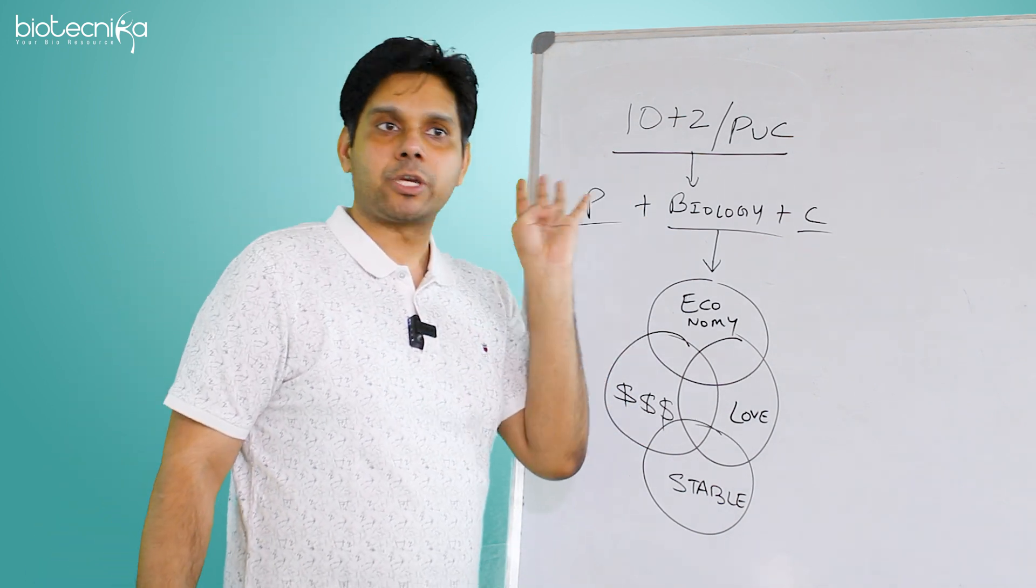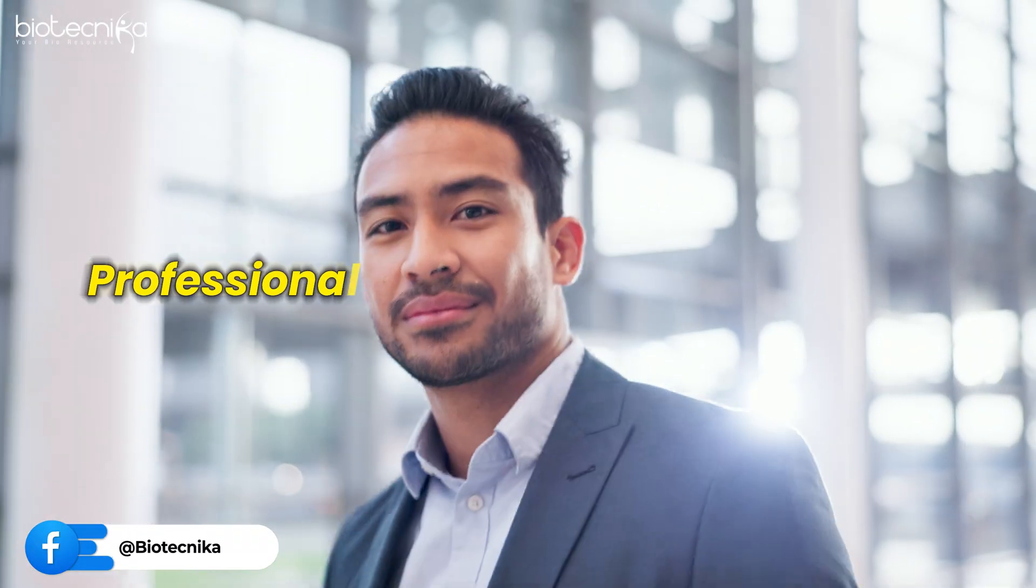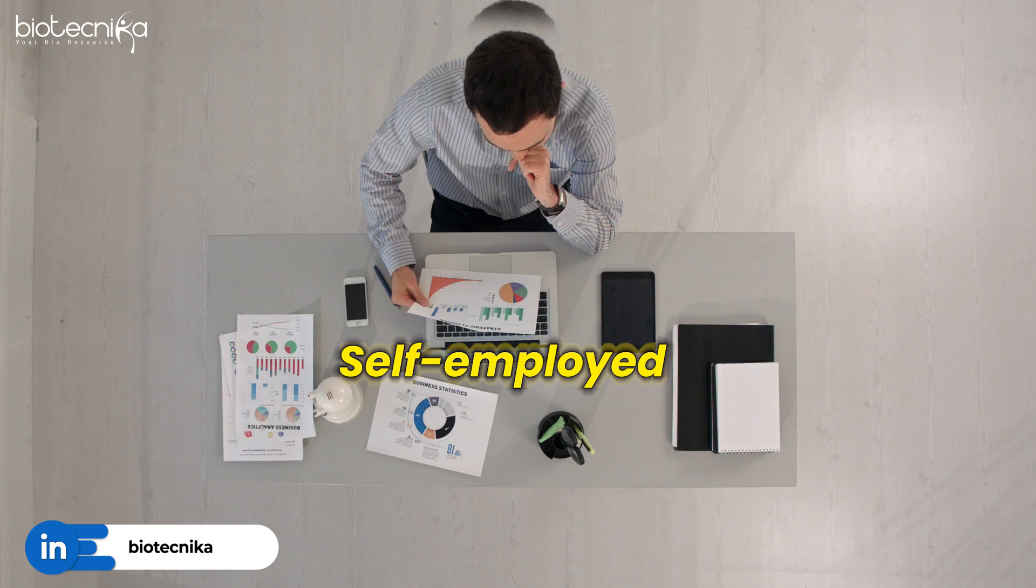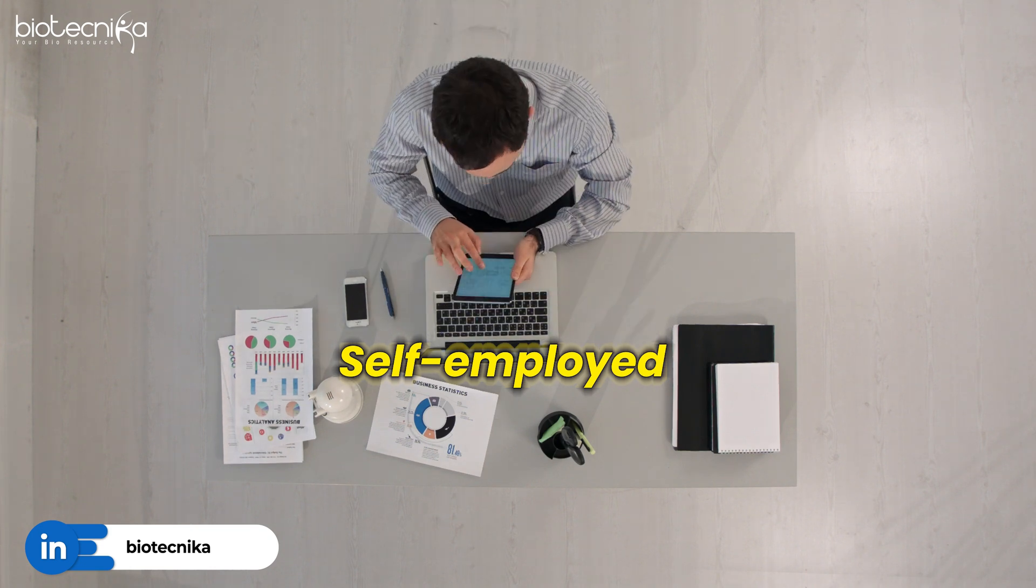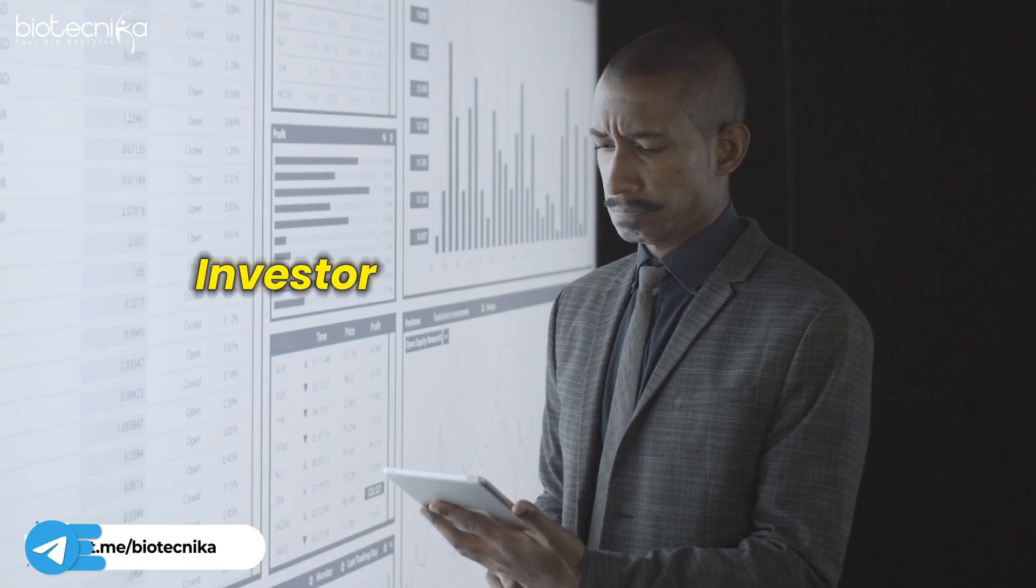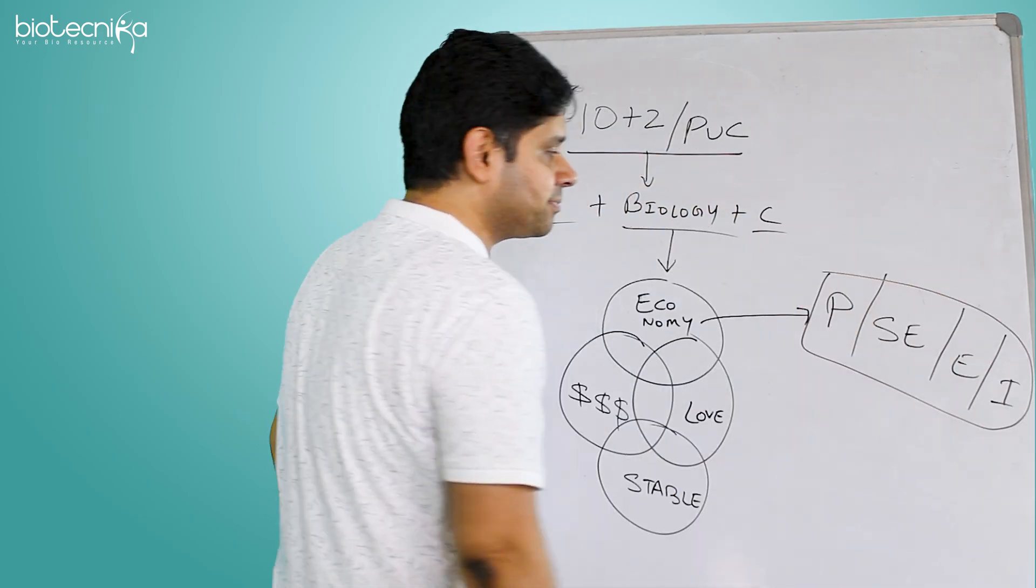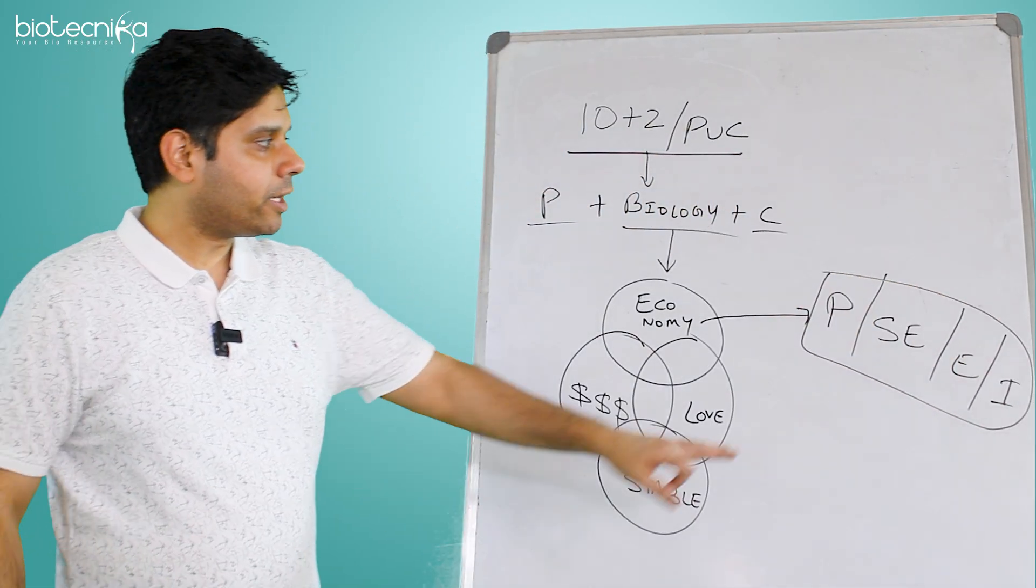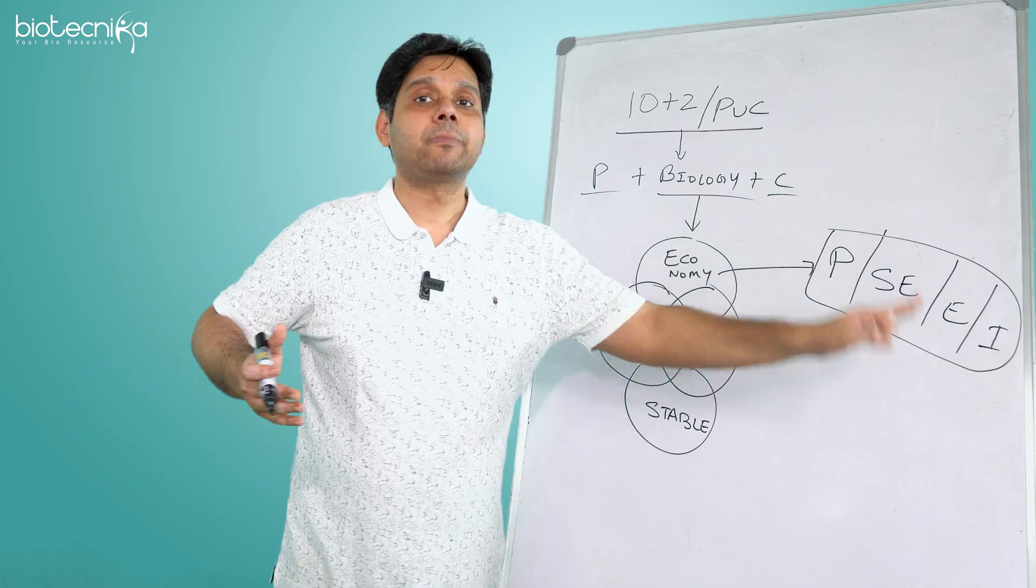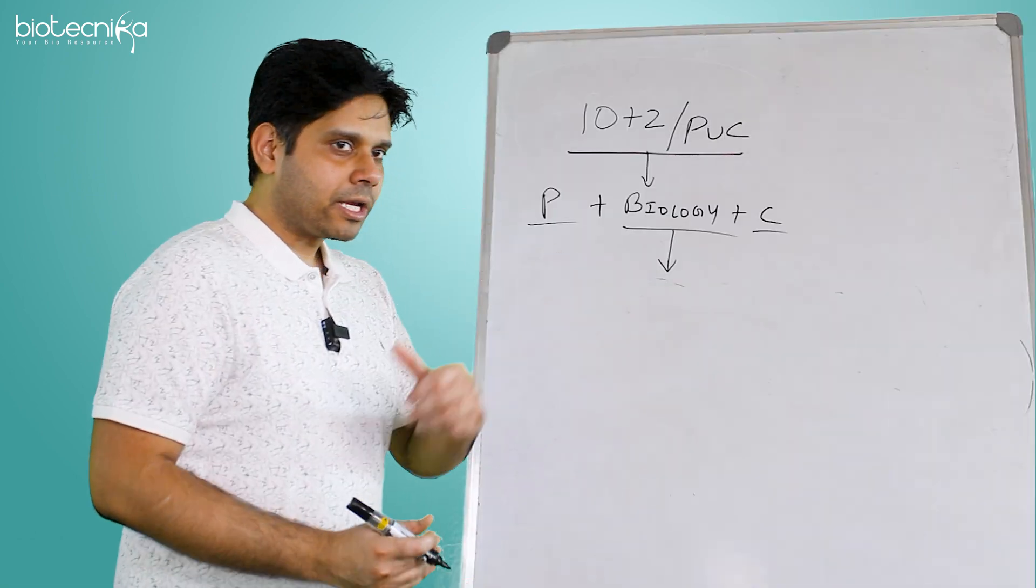At an early stage of your life, you have to know there can be four things you can pursue: you can either be a professional, self-employed (a doctor is self-employed), an entrepreneur like me, or an investor. The entire economy is divided into these four segments.